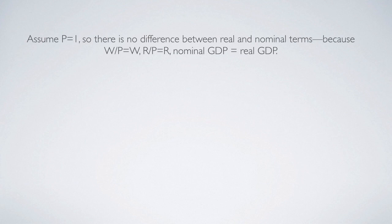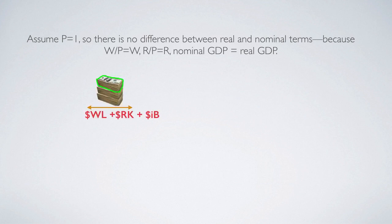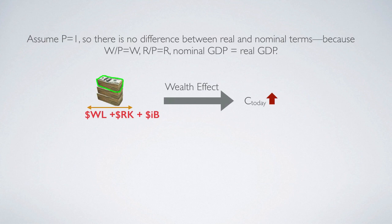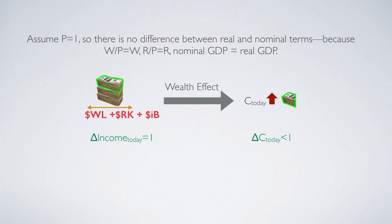Moving on to investment — to facilitate our discussion, we assume that the price level P is equal to 1, so nominal GDP represents real GDP as well. For this one extra pile of cash increase in income, we know it will increase consumption today, but normally consumption will not increase as much as the increase in income — it only increases a little bit. Why? Because we are talking about business cycle, and those good news that drive up input demand are temporary.